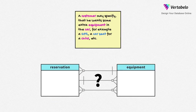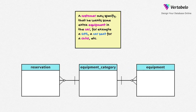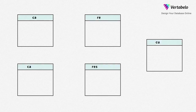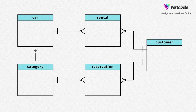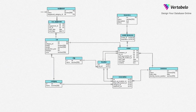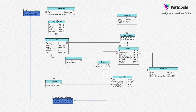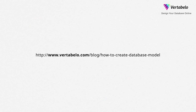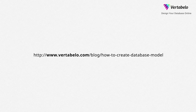Examples help you understand data types and relationships between tables. When you create a model, first identify the tables, then add references, and finally you add columns. Then you repeat the whole process — add more tables, more references and more columns. The car rental system example is analyzed in more detail in our blog article.